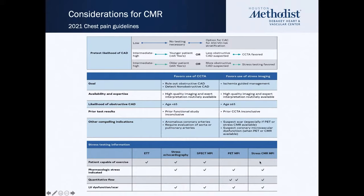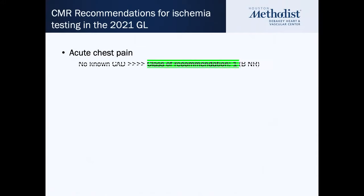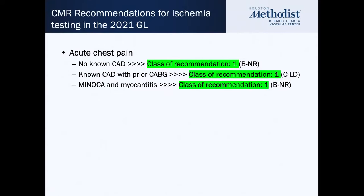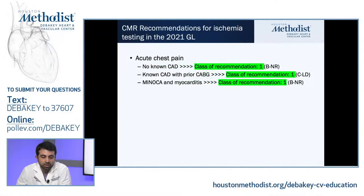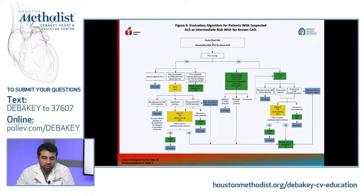We'll also talk about potential exercise capacity and how exercise MRI could be done. Another very important change, particularly when it comes to MRI, is that those who present with acute chest pain now have a class one recommendation for MRI — whether they don't have known coronary disease, whether they have known coronary disease with a prior bypass, particularly those with an MI and no obstructive coronary disease on angiogram, and those with potential myocarditis. All of these are class one recommendations for MRI, as well as those with known CAD. The strength of recommendation is generally the same for stress MRI as for other strategies.